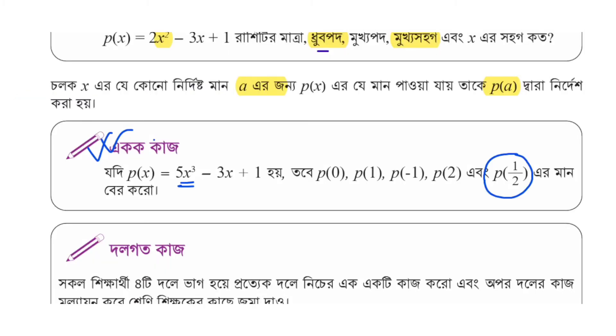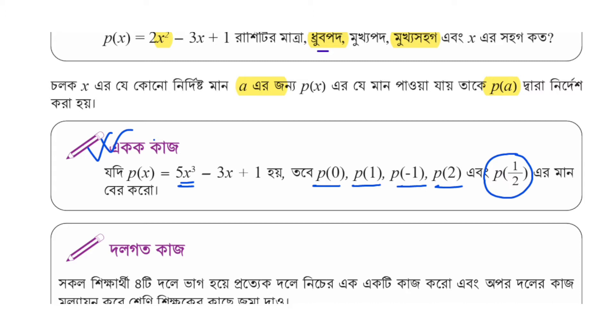We have 5x cube minus 3x plus 1, which is p(x). Now we need to find p(1/2). We already know p(1), p(-1), p(2). To find p(1/2), we substitute: 5 into (1/2)³ minus 3 into 1/2 plus 1.